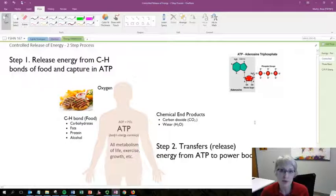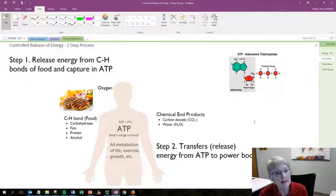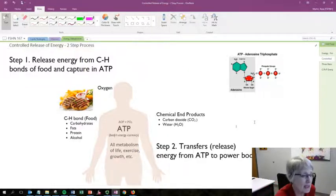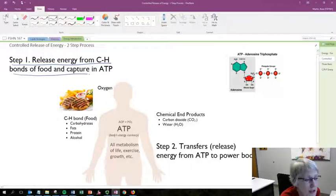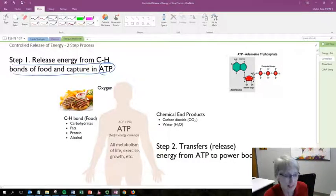Let's think about how the body is going to control that and look at those steps. Overall, we have two basic steps of how the body takes food energy and then gets it in a way that we can actually spend it for the body. The first step is to release the energy in the carbon-hydrogen bond and we're going to capture it in a special molecule called adenosine triphosphate, or ATP.